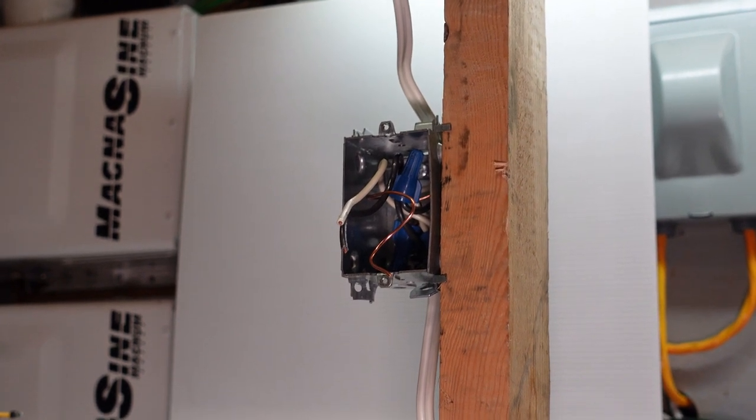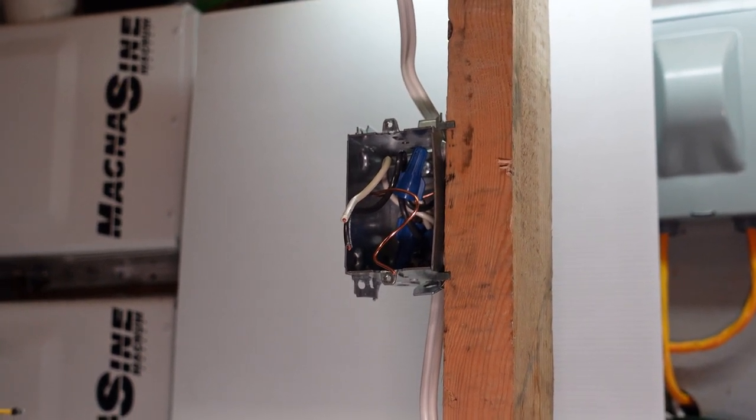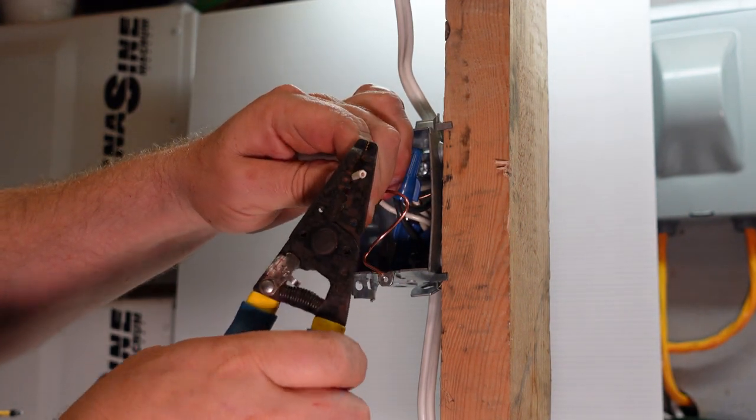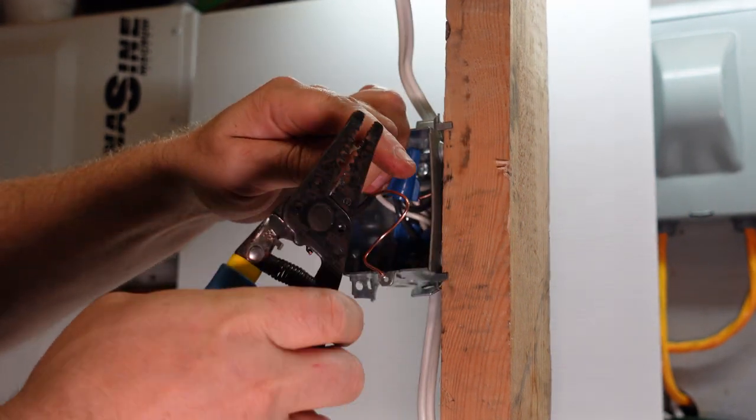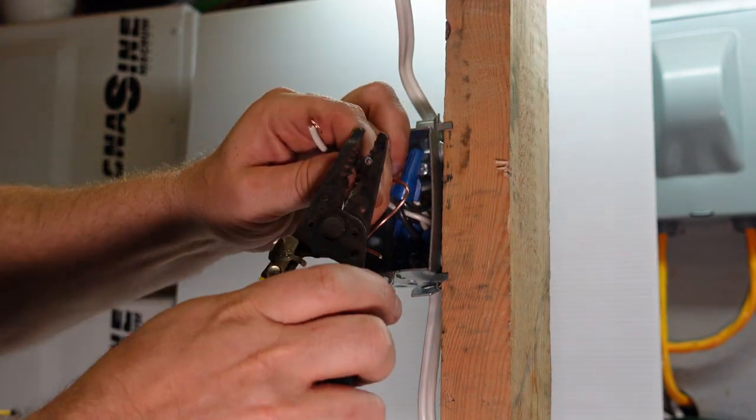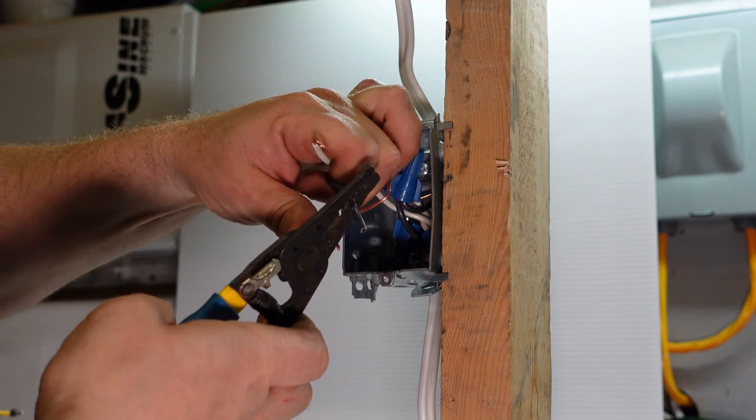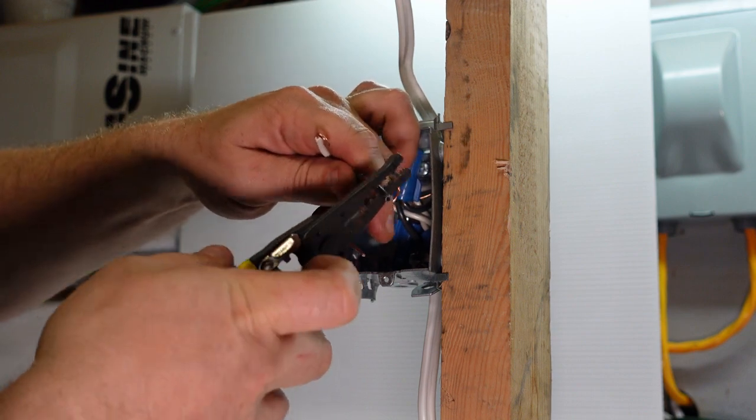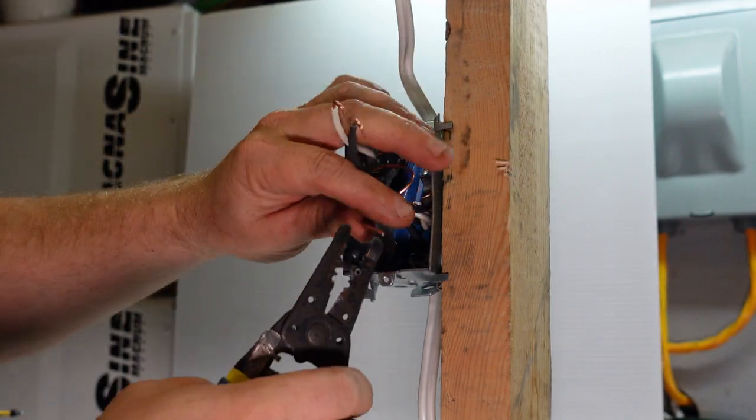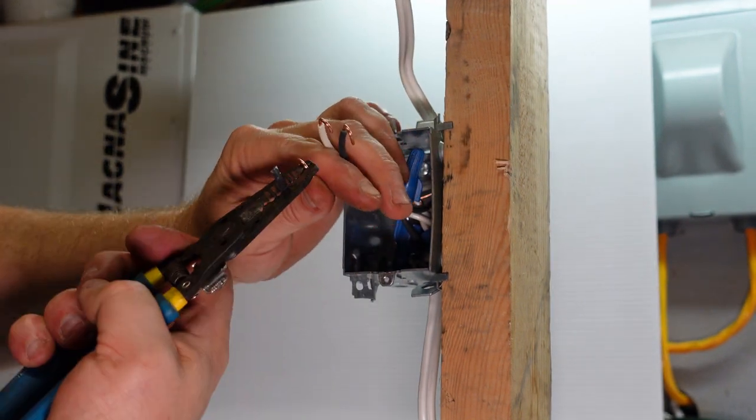Grab one off the bench here and we are going to re-strip these wires with an actual pair of strippers. We're gonna strip them back about three quarters of an inch and we're gonna put hooks on them in a clockwise motion, not counterclockwise, and we're gonna do that the same with the bare grounding conductor.